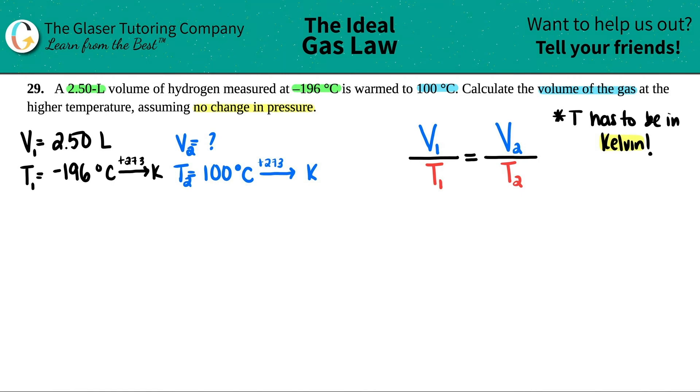So let's figure out these temperatures in Kelvin. So negative 196 plus 273, I get 77 Kelvin for T1. So this will be 373 Kelvin.